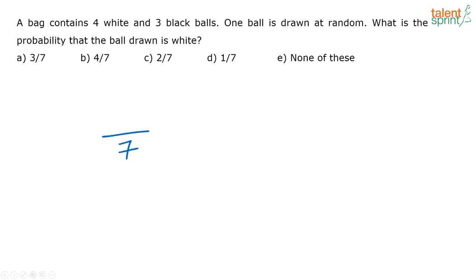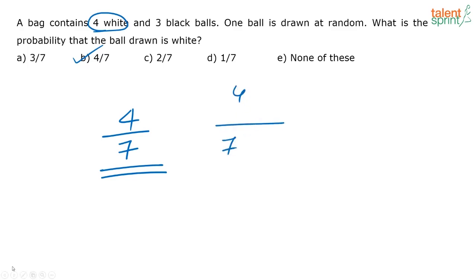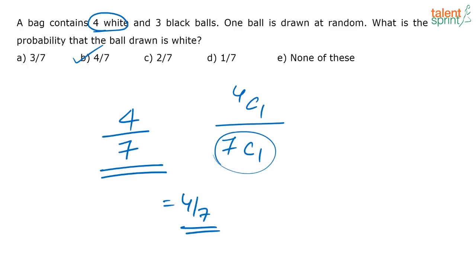There are total 7 balls and I have to draw 1 ball. If I draw any one of the 4 white balls, I get my required result. So the answer is 4 by 7. The answer is option B. If you want to write it formally: out of 7 balls, I am choosing 1 ball in 7C1 ways — that is the total number of ways. To choose a white ball, I select 1 from the 4 white balls in 4C1 ways. So the probability is 4C1 by 7C1, which equals 4 by 7. Since you are choosing only 1 ball, you can directly say the answer is 4 by 7.